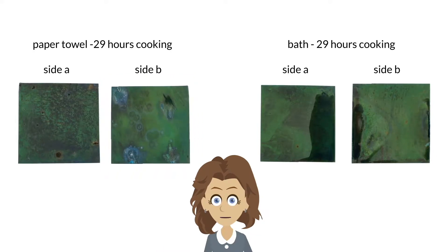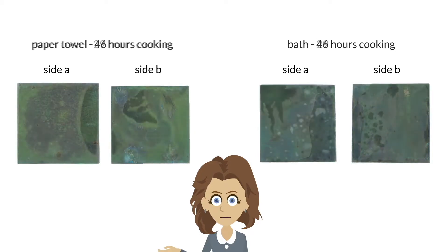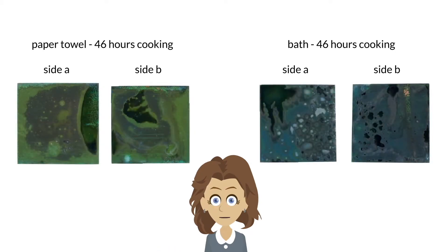After 46 hours, we finally see a marked difference between the two fume chamber methods, the paper towel method staying with shades of greens, and the bath method moving into shades of blues. And we're back to a very spacey, abstract landscape.